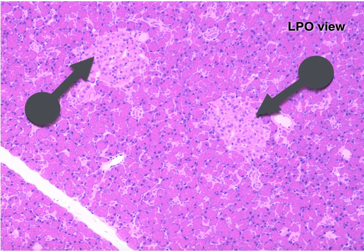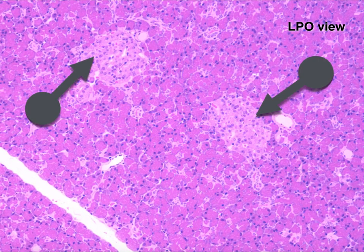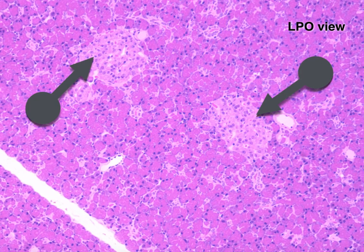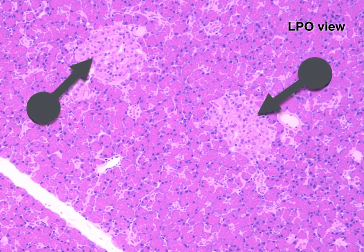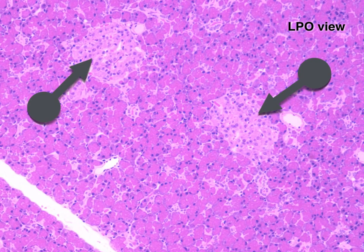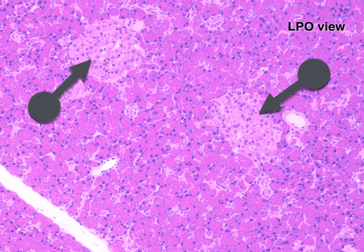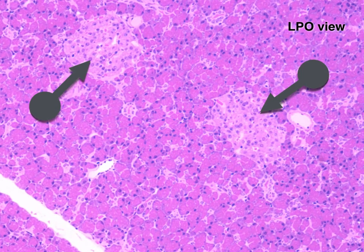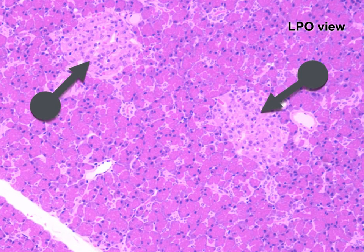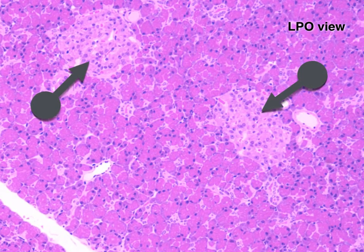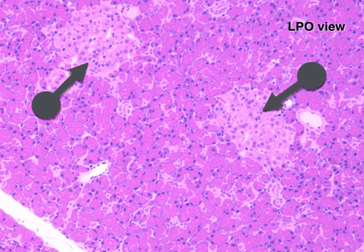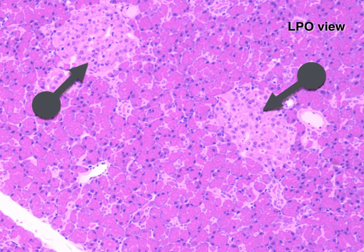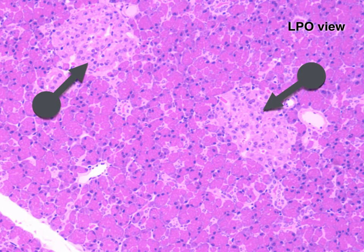The islets of Langerhans, as pointed by the two arrows, appear as distinct islands in a sea of pancreatic acinar cells. They constitute just a small percentage — two percent — of pancreatic tissue. The islets can be identified because of their distinct geometric cord pattern and high vascularity when compared to the acinar cells. Within the islet are alpha, beta, and D-cells. Several blood vessels are also visible near the islets.